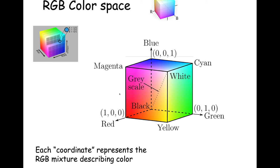If you have equal representation of red, green, and blue, you get a shade of gray. We draw this diagonal from origin to the extreme — that's the grayscale line. Every color in RGB with equal saturation of red, green, and blue corresponds to grayscale. Colors not on the gray line contain an actual non-gray color component.